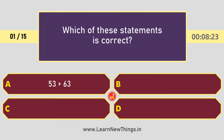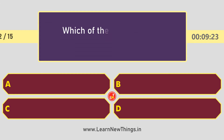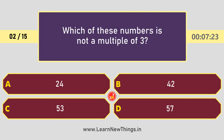Which of these statements is correct: 43 is less than 51. Which of these numbers is not a multiple of 3?